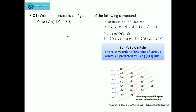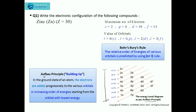Before telling you the technique to write the electronic configuration, I just want to review a few important points which form the basis of writing it. Here you can see the sequence of filling of electrons in orbitals belonging to different energy levels as per the Aufbau principle. The Aufbau principle, also known as the building-up principle, states that in the ground state of an atom, electrons are added progressively to the various orbitals in increasing order of energies, starting from the orbital of lowest energy.